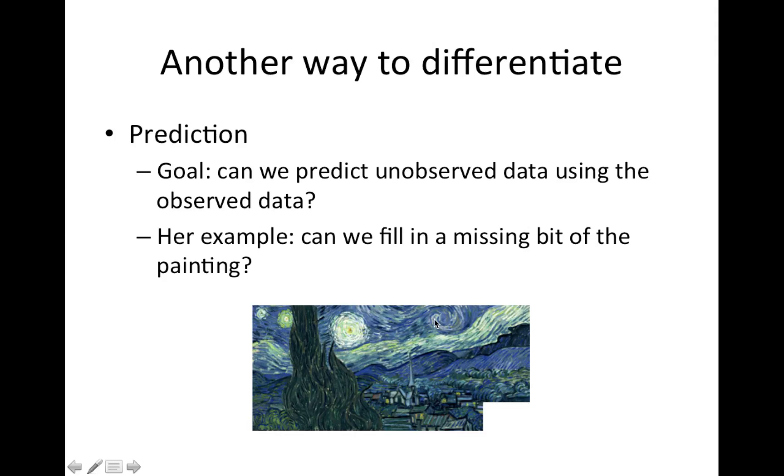That's explanation, explaining real life. Prediction on the other hand is more staying within the realm of the data. We have our data but there's part of the data we didn't collect and the goal now is we have this unobserved data, this chunk, this lower right-hand corner - can we predict the unobserved data using the data that we do have? Can we fill in this missing bit of the data?